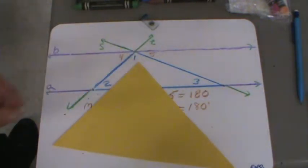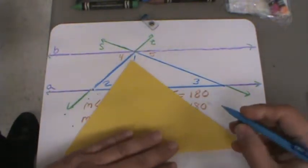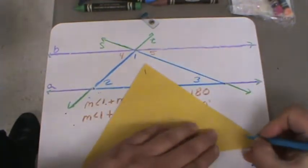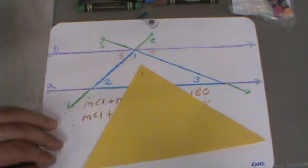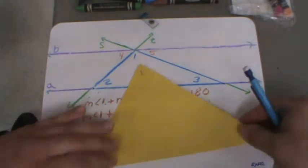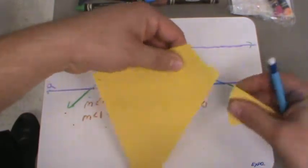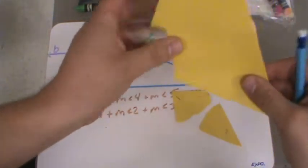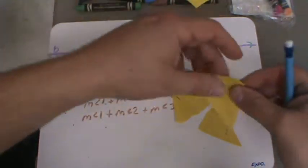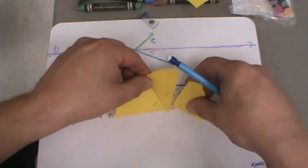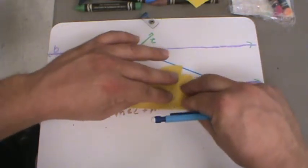If you take any triangle, here's another proof of it. I'm going to label this angle 1. I'm going to label this angle 2. And I'll label this angle 3. If I take this triangle and I tear off these three points, and I line up all the smooth edges, which would be the outside angles there, if I put them all together,